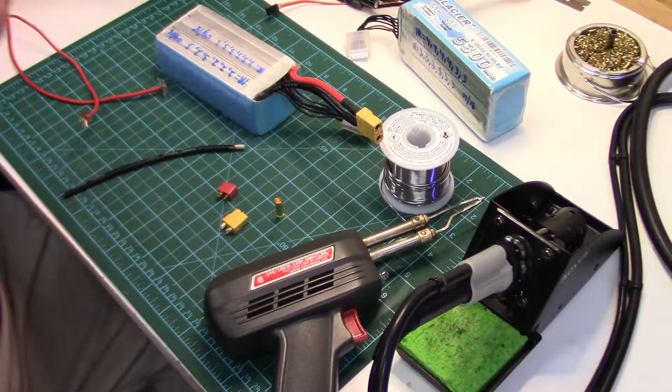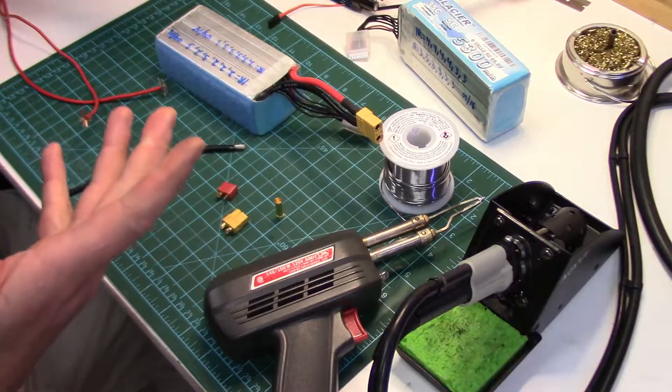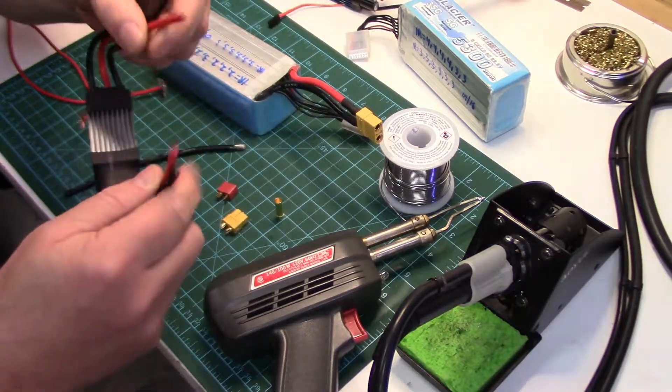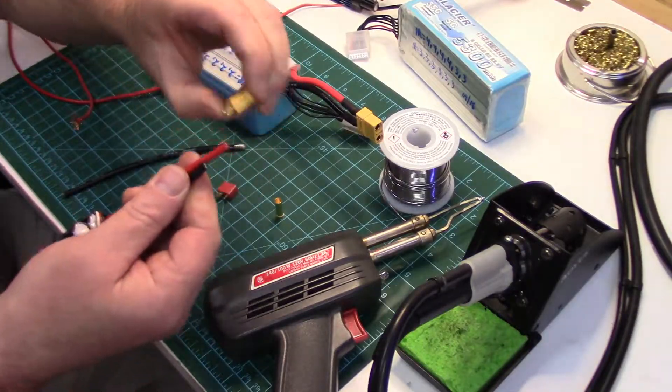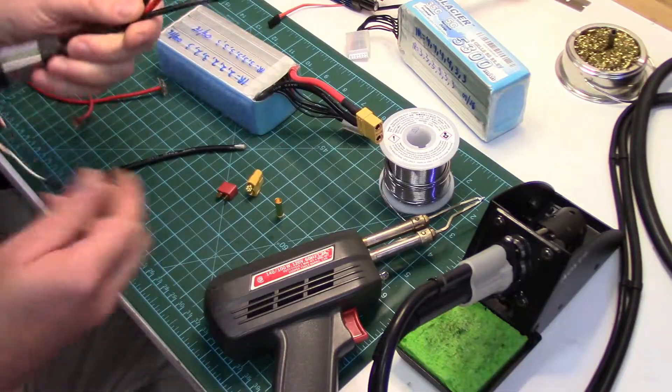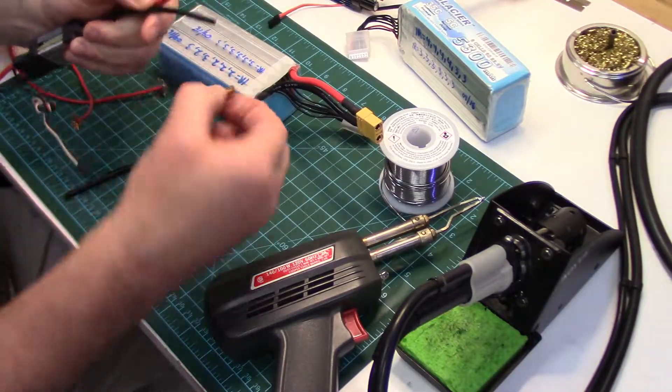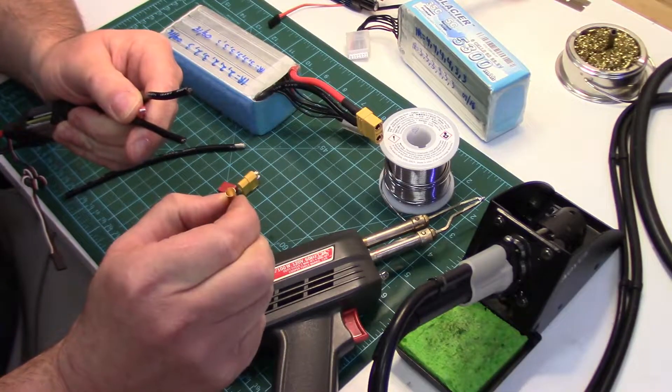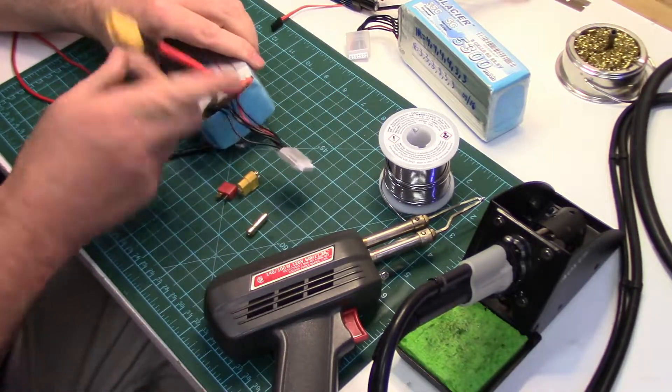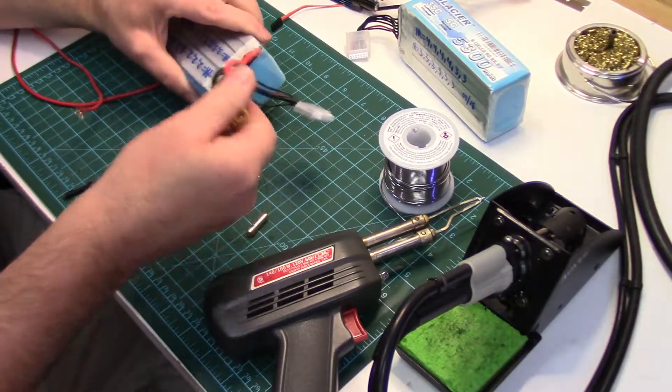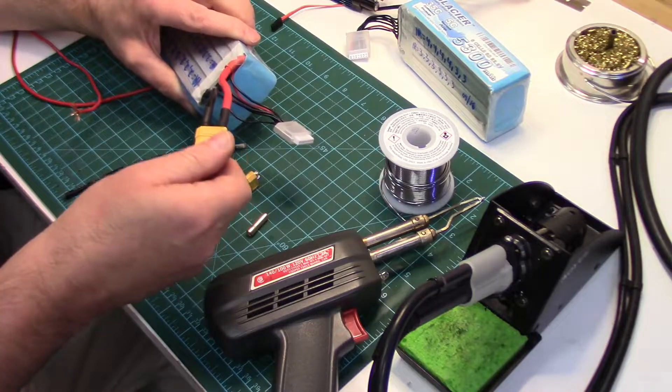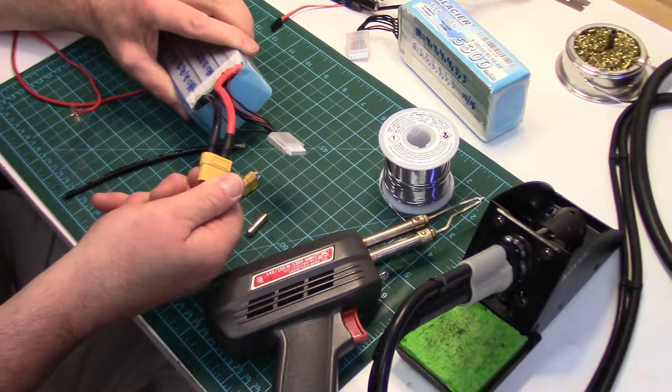One main reason you have to know how to do this is because most ESCs when you buy them, they don't have connectors on them, either the connector for the battery or the bullet ends that you have to solder on for your motors. A lot of times batteries don't come with connectors. This one's got one on, but a lot of times when you buy a battery they don't, or you might need to change it because you use a different connector type on your ESCs.